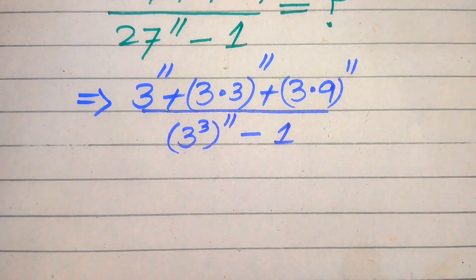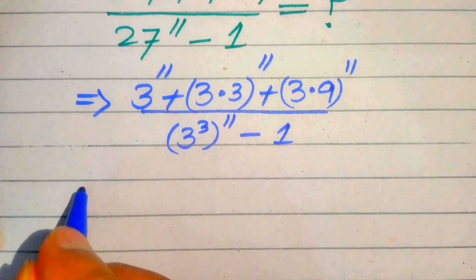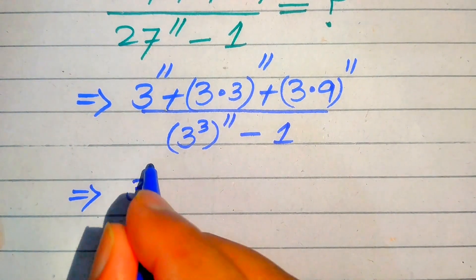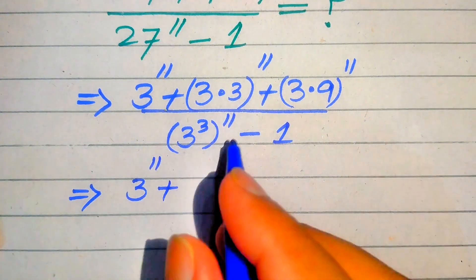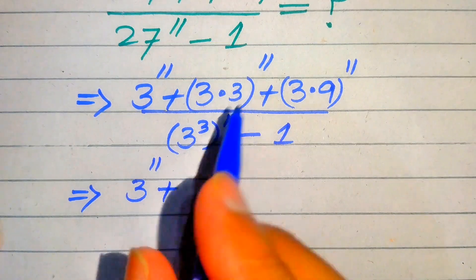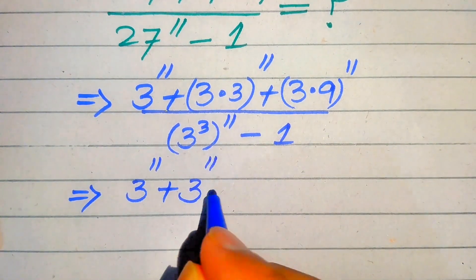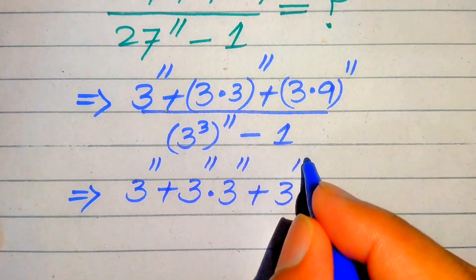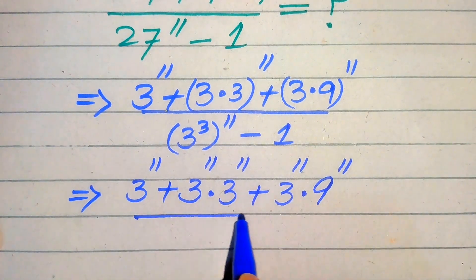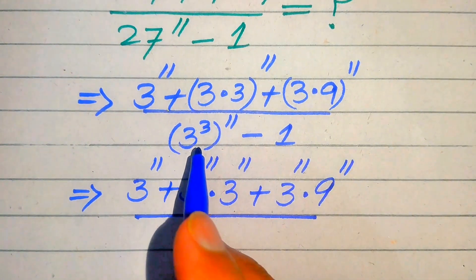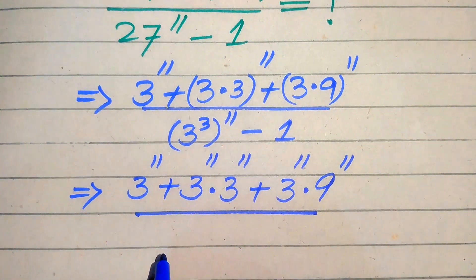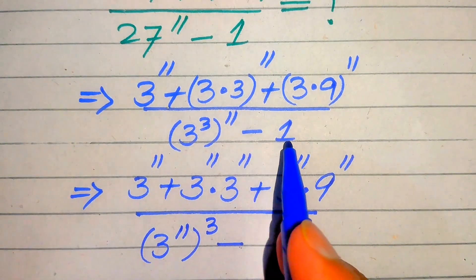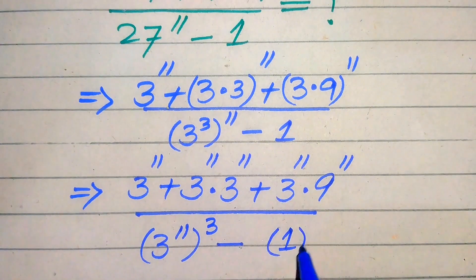Now, if you have two numbers multiplied together in the base, we can apply the exponent separately on both values. So we write this as 3 to the power of 11, plus 3 to the power of 11 multiplied by 3 to the power of 11, plus 3 to the power of 11 multiplied by 9 to the power of 11, divided by 3 to the power of 11 whole cubed, minus 1 cubed.